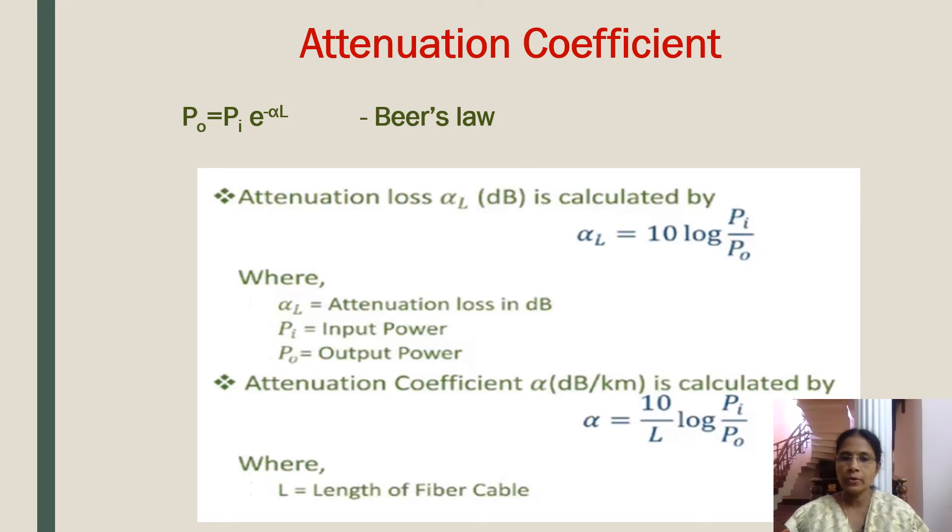Attenuation coefficient alpha, which is dB per kilometer, is calculated by equation alpha equal to 10 by L log Pi by Po, where L represents the length of optical fiber.